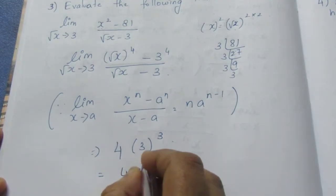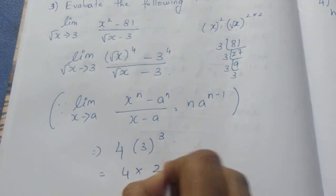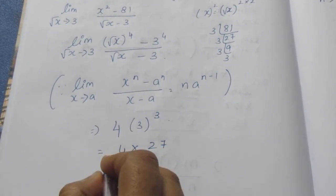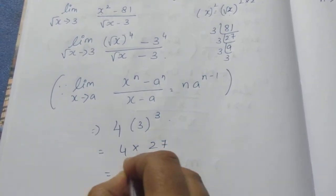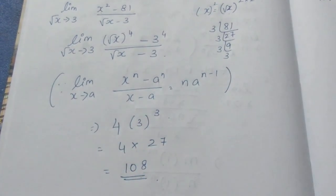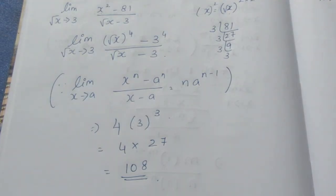Now this is 4 into 27. This is equal to 108. So this is the sum. Thank you.